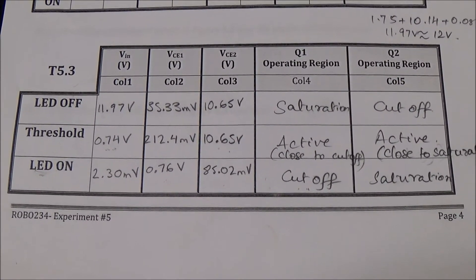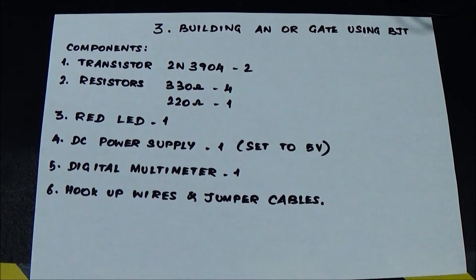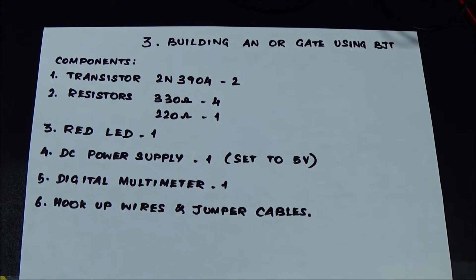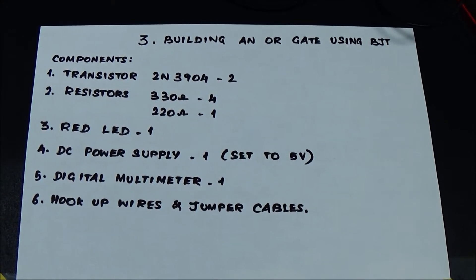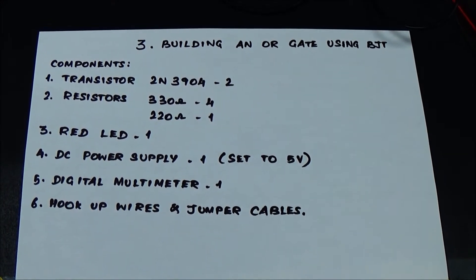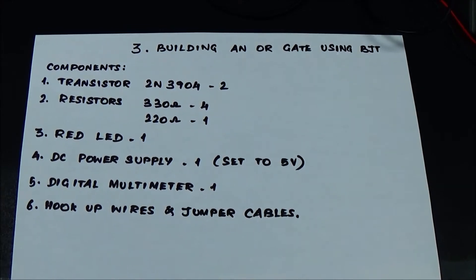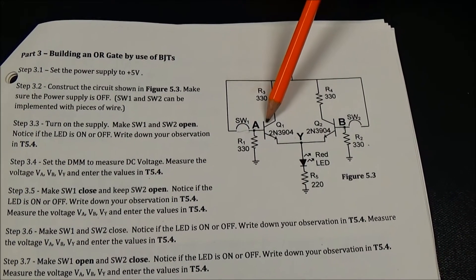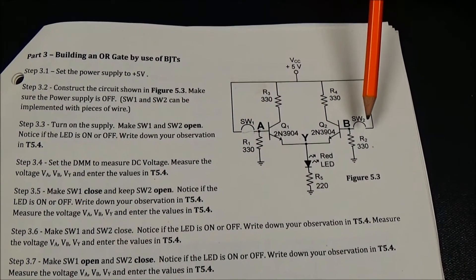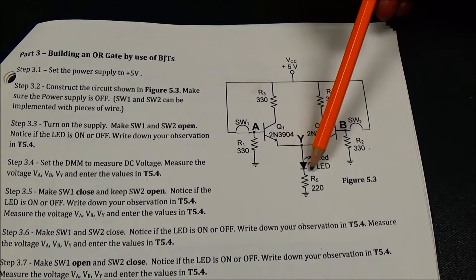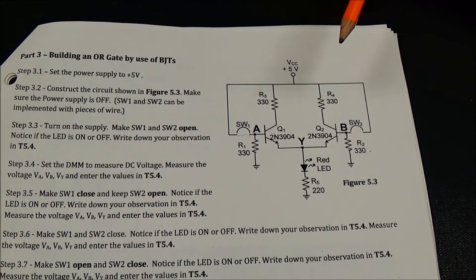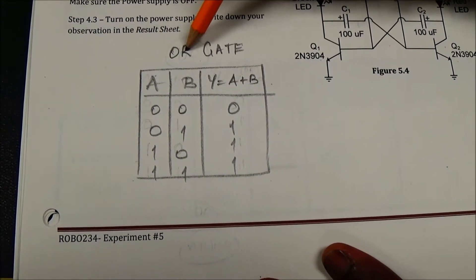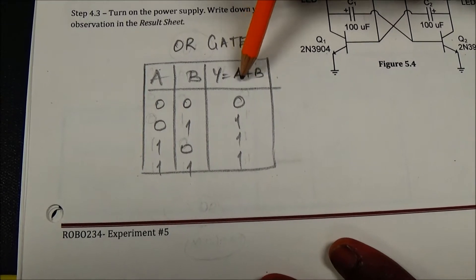We are going to assemble an OR gate using BJT. The components required are transistor 2N3904, resistors 330 ohms and 220 ohms, red LED, DC power supply set to 5 volts, digital multimeter, and hookup wires and jumper cables. We are going to build the OR gate with transistors using 2N3904 transistors and resistors as shown in the diagram. An OR gate produces the A plus B logic function.